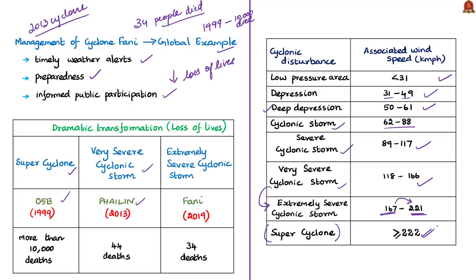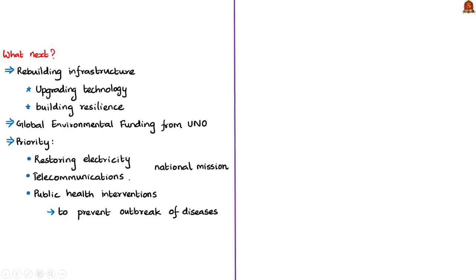After the devastating effects of Cyclone Fani, the Odisha state government and the central government must rebuild damaged infrastructure as quickly as possible. While rebuilding, focus must be given to preventing future losses by upgrading technology and building resilience to extreme weather events. The central government shall press for global environmental funding from appropriate UN frameworks. Priority in rebuilding should go to restoring electricity and telecommunications, treated as a national mission, followed by public health interventions to prevent disease outbreaks.